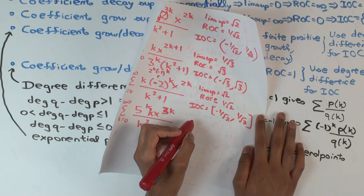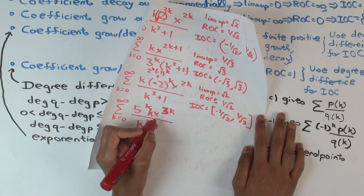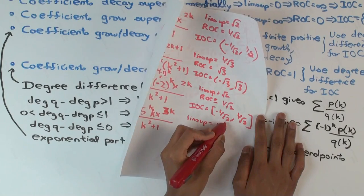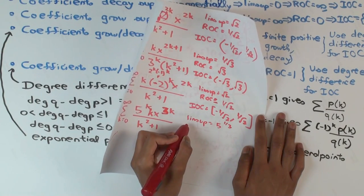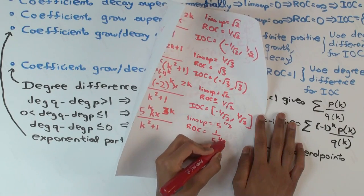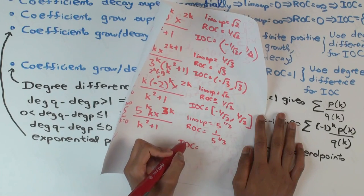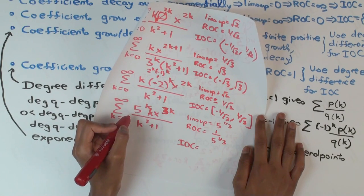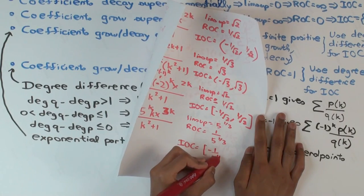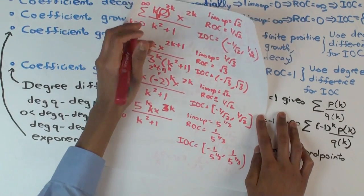For the last example with exponent 3k: the limsup gives a radius of convergence of 1 over the cube root of 3, and the interval of convergence follows accordingly.